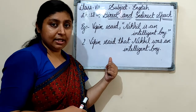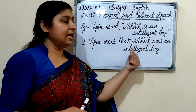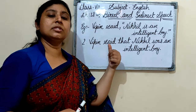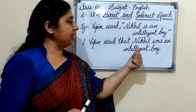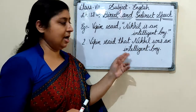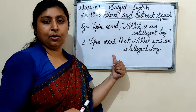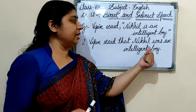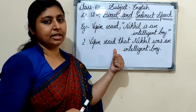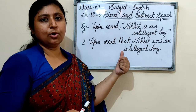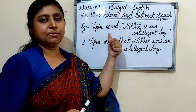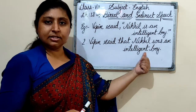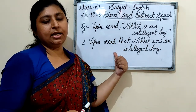Now from the second sentence, what do we make? 'Vipin said that Nikhil was an intelligent boy.' Both sentences have the same meaning — that Nikhil is an intelligent boy — but told in two different ways. In indirect speech, the exact words of the speaker are not used. This is called Indirect Speech.